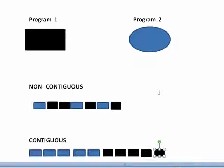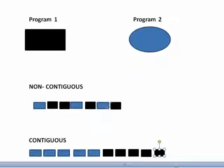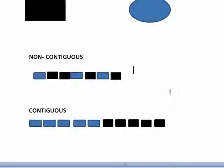Because when data is written to the drive, it goes into the first empty spots. What this means is that your drive has to work harder, because the disk head, in order to read program two, has to go here, then jump over to here, then jump over to here, then jump back to here. When you've defragmented a drive, it attempts to put back all the data for programs in a contiguous fashion.